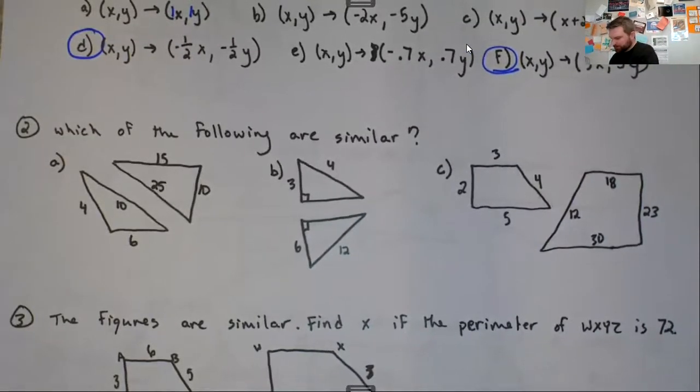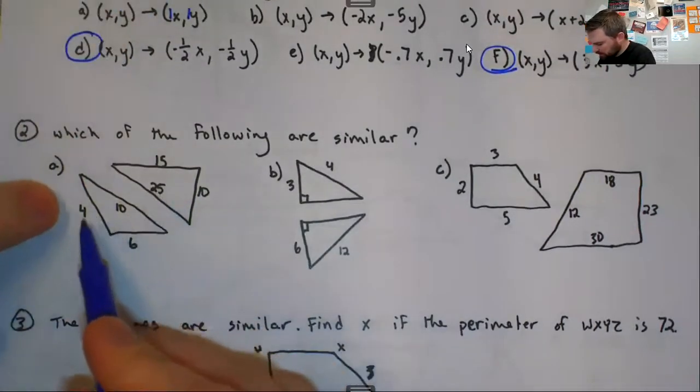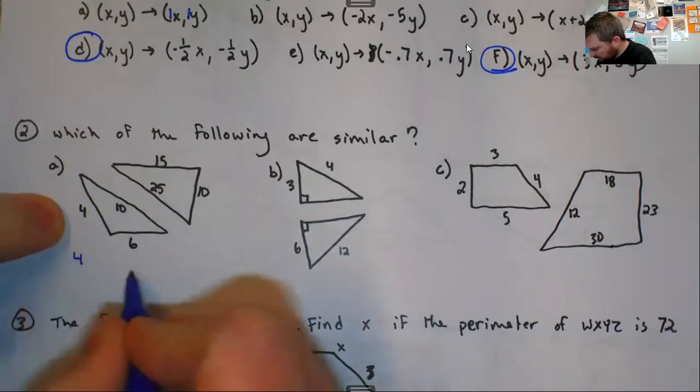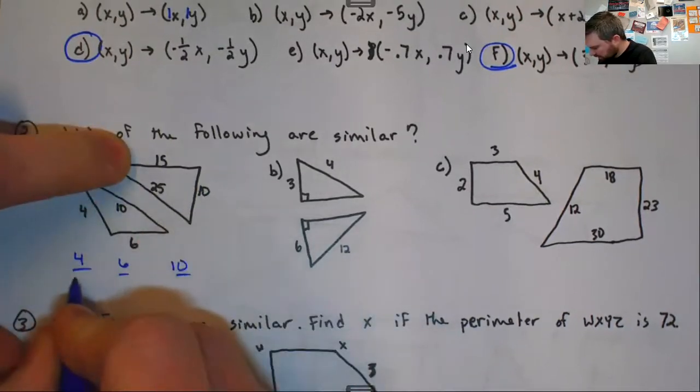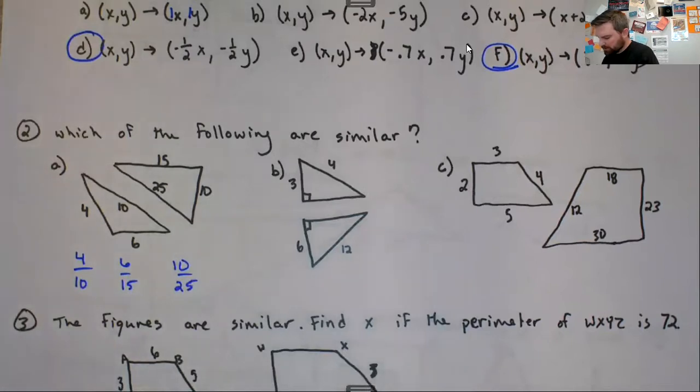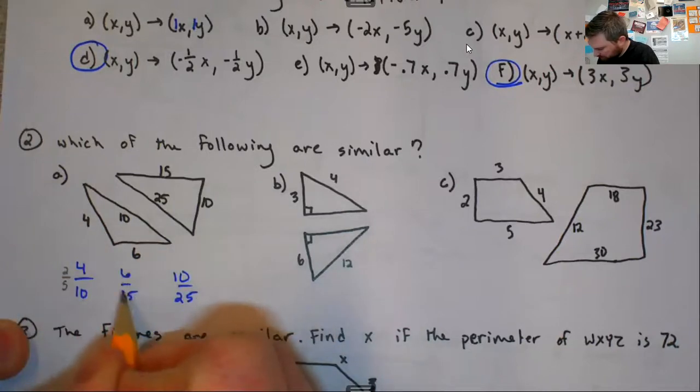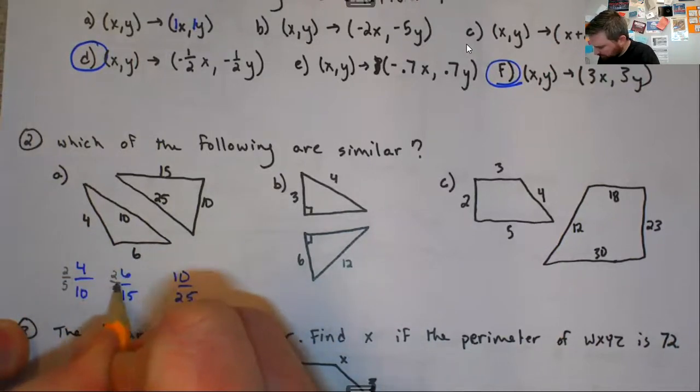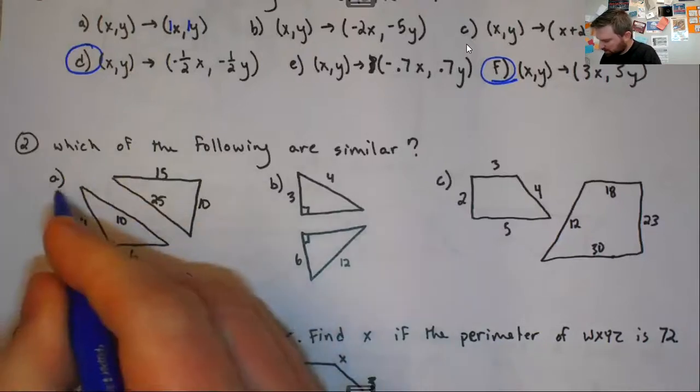Number two, which of the following are similar? In order to be similar, they have to have the same scale factor or your sides have to be proportional. Here, we'll take the smallest side, which is four, and then six, and then 10. We'll go in the same order. So the smallest is 10, then 15, and 25. They all have to reduce to the same. If we reduce this one, we divide both by two, and we get two over five. If we divide by three, we get two over five. And if we divide by five, we get two over five. So this one is similar, because your sides are proportional.